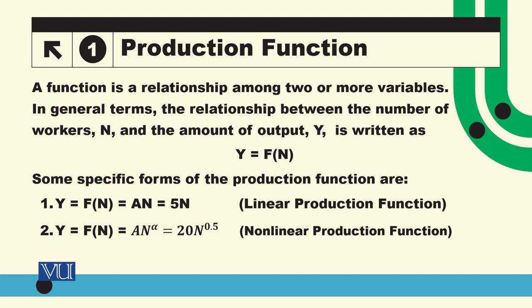The most simple one is the linear production function. So yeh example ae linear production function ki, ke y is equal to a n. A is some constant, n is the units of workers. So a ki value hum 5 assign kar rahe hain. 5n means ke number of workers ko ab 5 se multiply karhenge. Toh this will give you the amount of output.